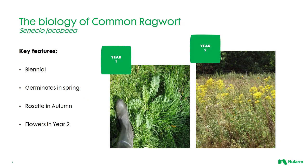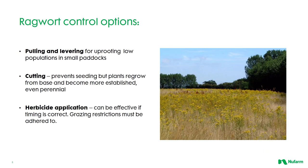To understand how to control common ragwort, we need to look at the biology of the plant. It's a biennial — it germinates in spring, reaches rosette stage in the autumn, and then goes on to flower in the following year. We'll look at some of the different control options for common ragwort.